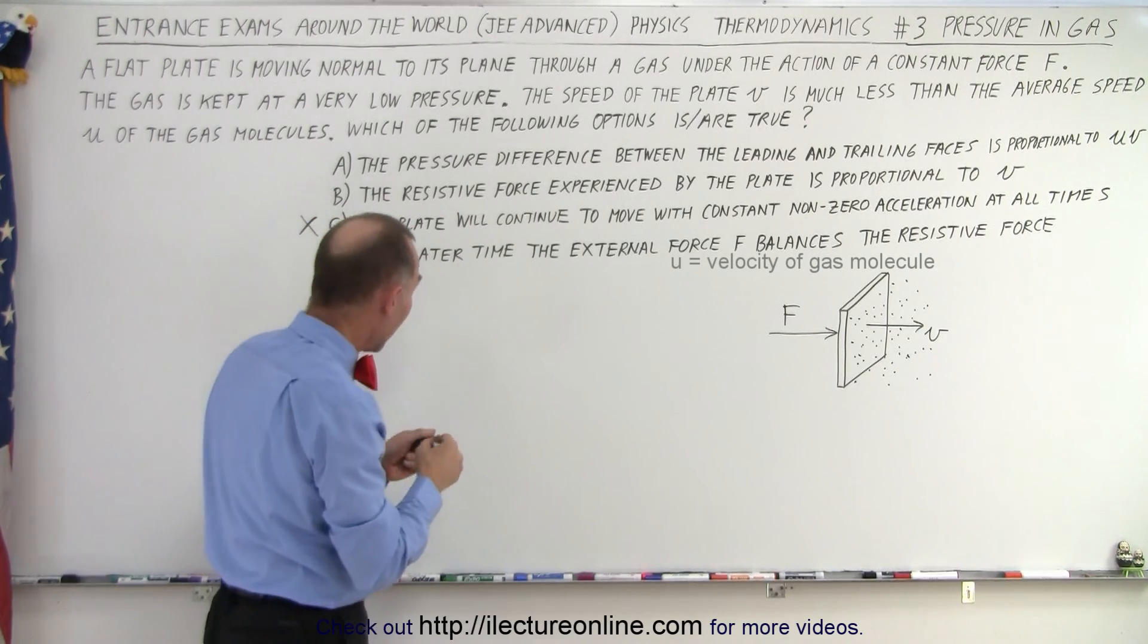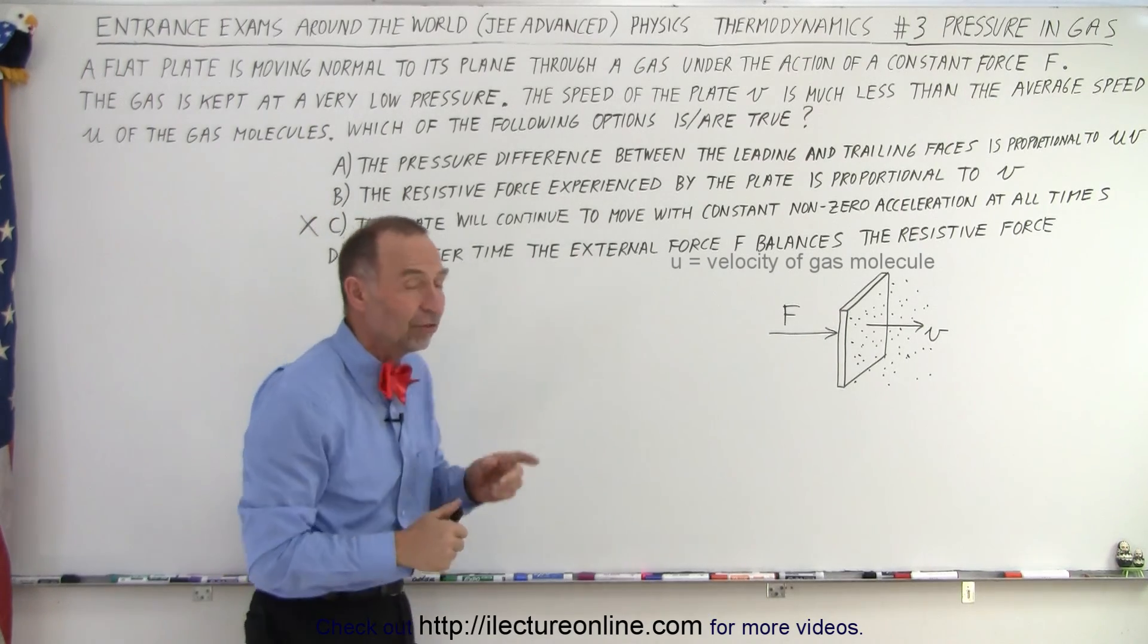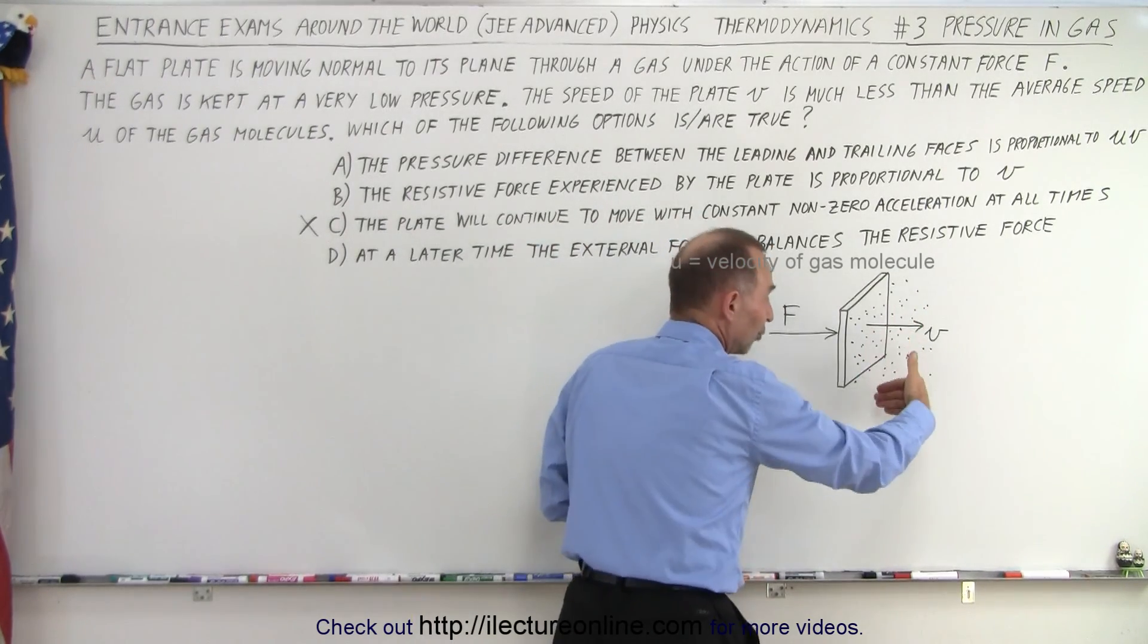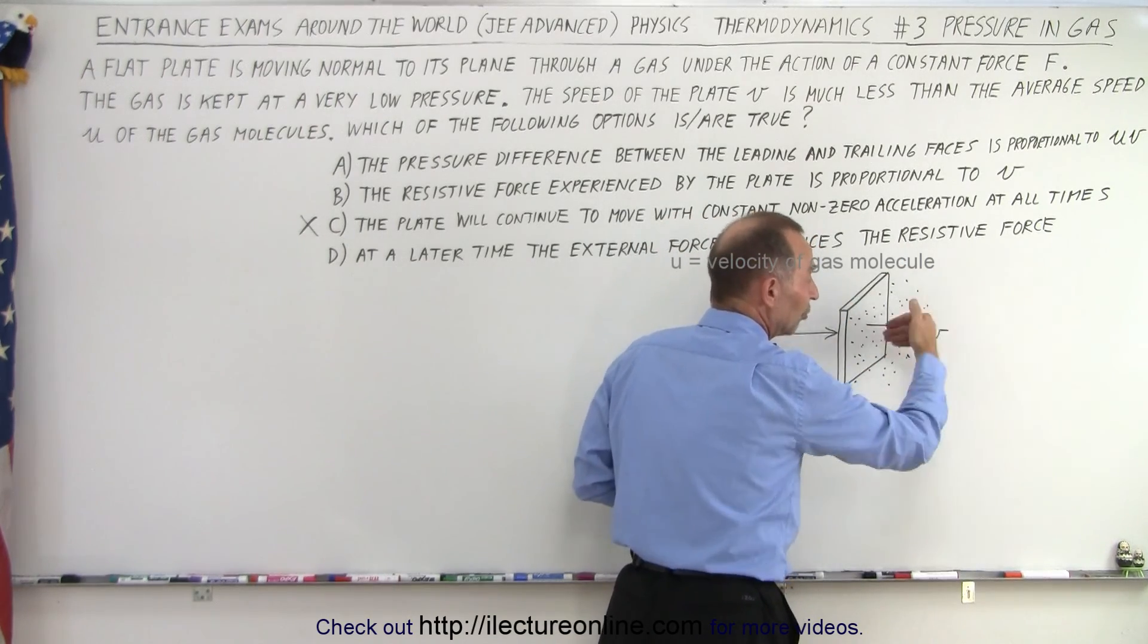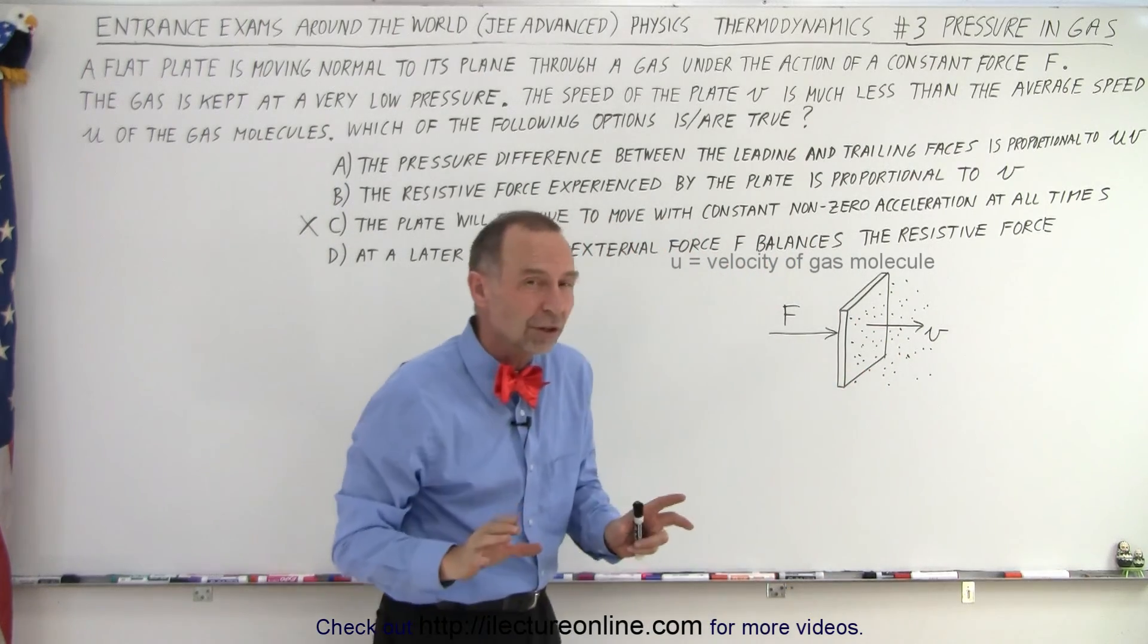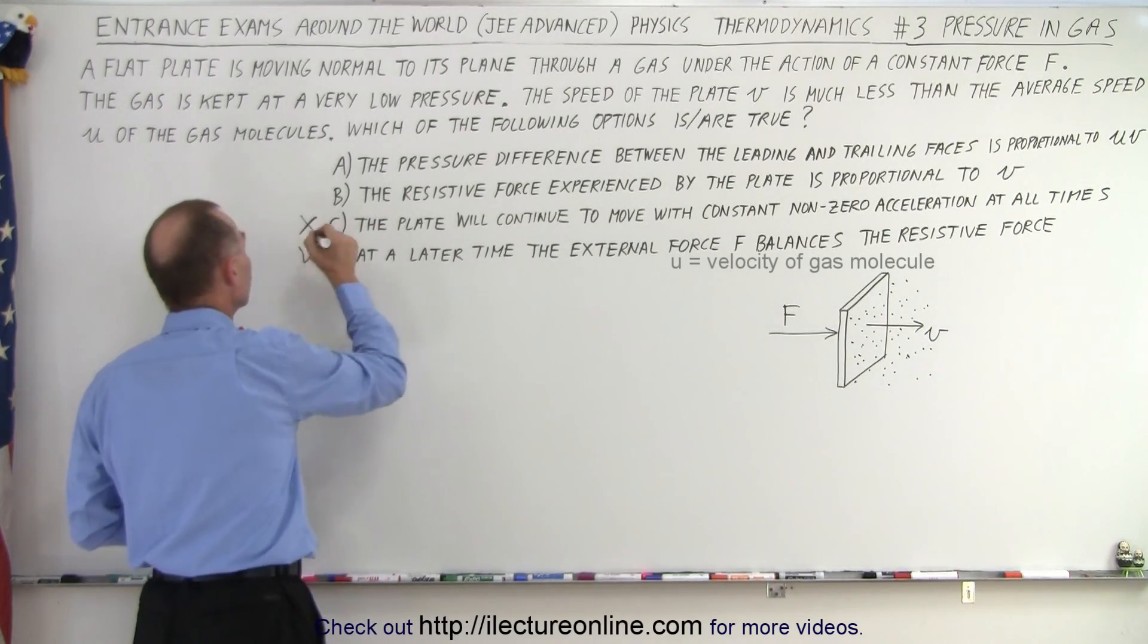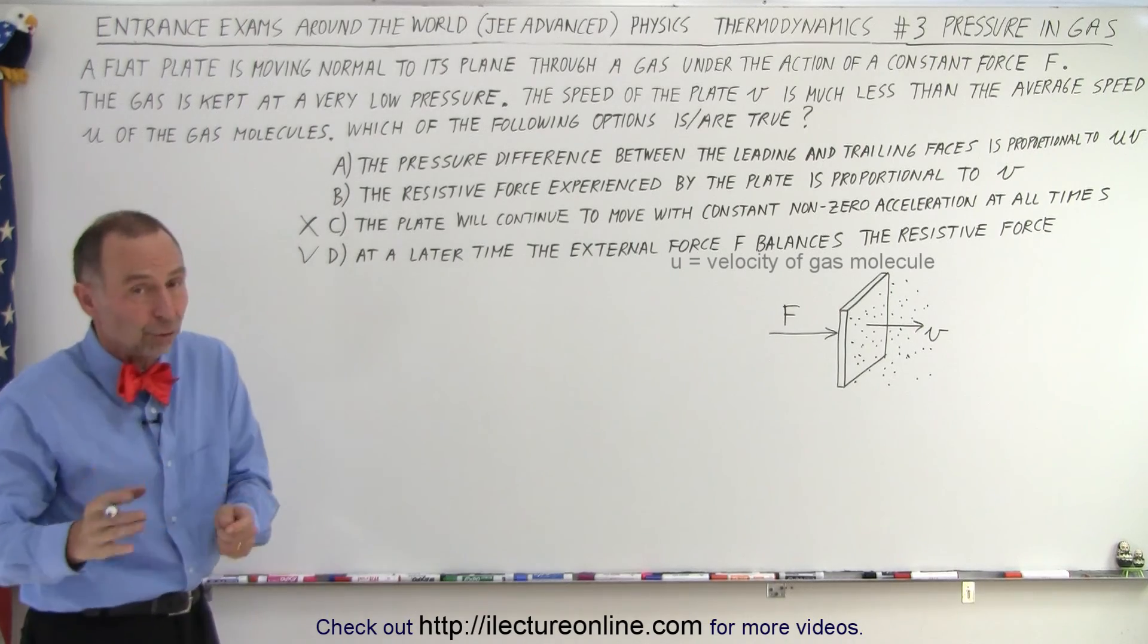Now D says at a later time the external force F balances the resistive force. In other words, eventually the resistive force will continue to increase as you move faster and faster, and eventually the force pushing back will equal the force that pushes the plate. Once they're equal to each other, the acceleration stops. So that means at some later time they will balance out and that is a true statement. Typically C and D cannot be true at the same time.